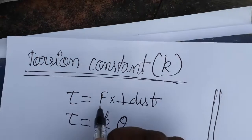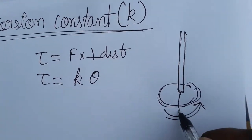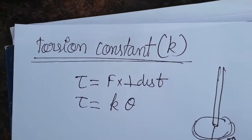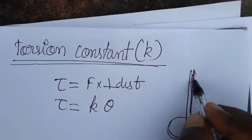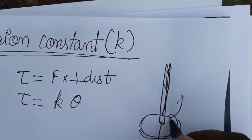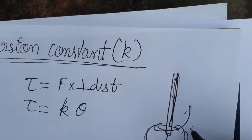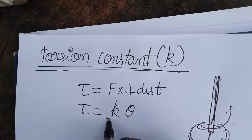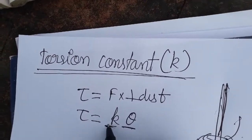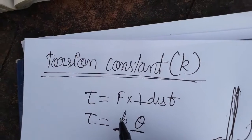it creates a turning effect. Turning effect is force into perpendicular distance. And also this wire is going to create the restoring force, which is opposite to the torque, that is K times theta, angle of twisting, and K we call torsion constant.